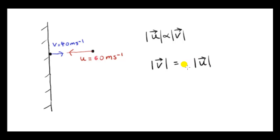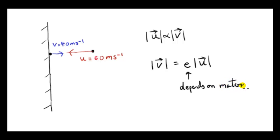The constant we use is called e, denoted by the letter e, and it's called the coefficient of restitution. It depends on what the particle is made of and also what the barrier is made of. To go from a proportionality relation to an equation, we multiply by a constant. We normally write: final speed equals e times the initial speed. We could also write: initial speed equals one over e times the final speed.